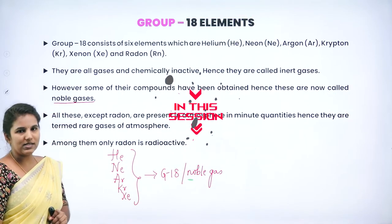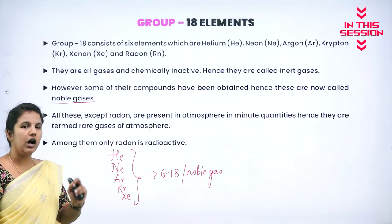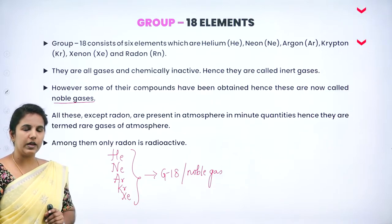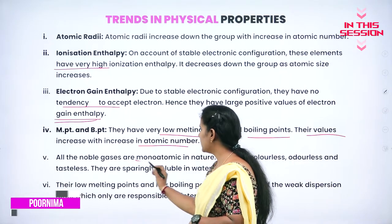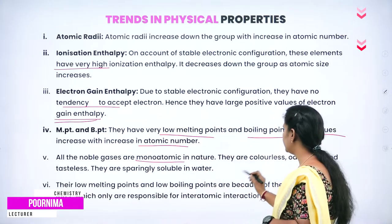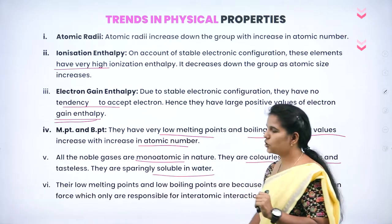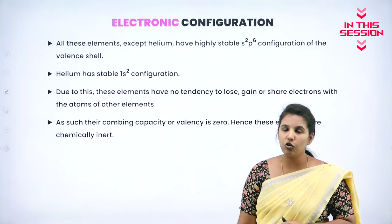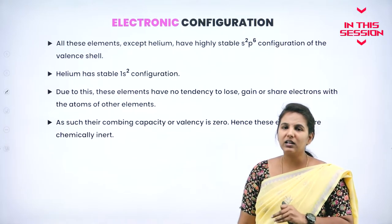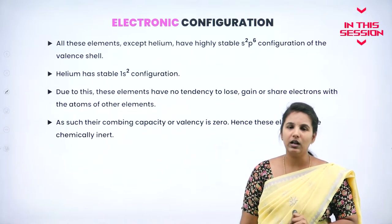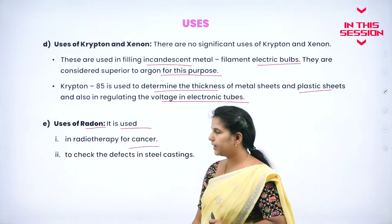Noble gases are present in the atmosphere in very small extent. All noble gases are monoatomic in nature, colorless, odorless, and tasteless, and are very sparingly soluble in water. These zero group elements or group 18 elements have completely filled shells. One of them, radon, is radioactive and is used in the radiotherapy of cancer.